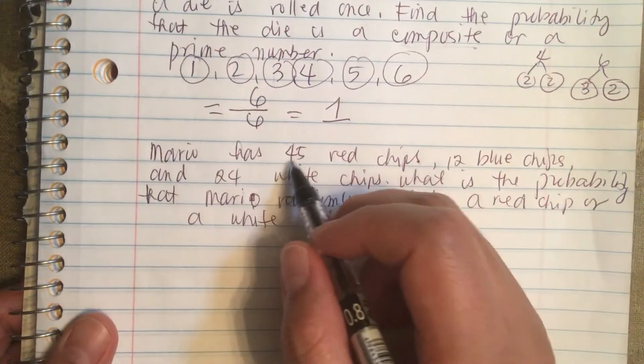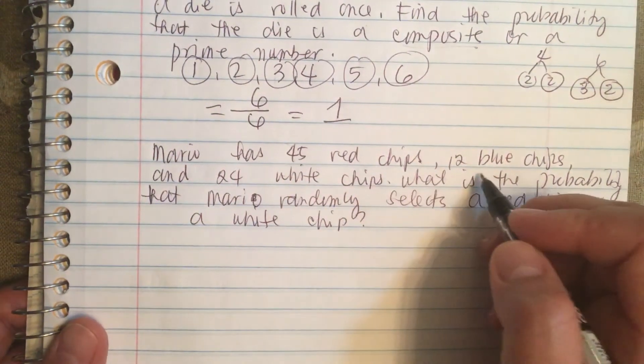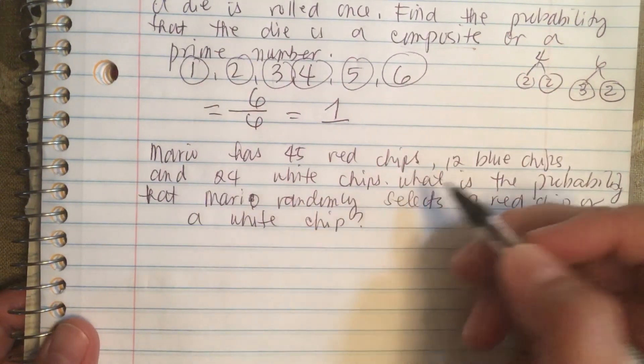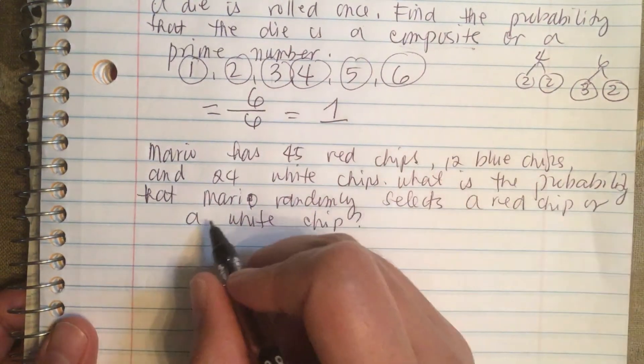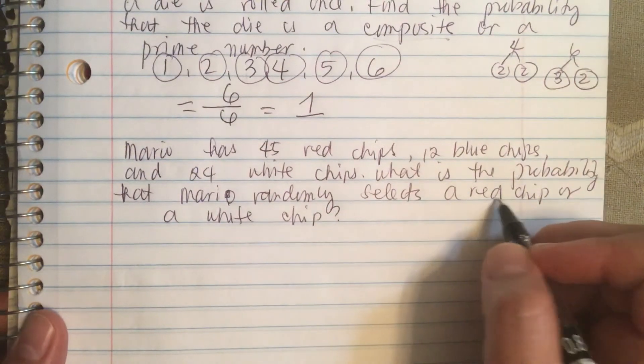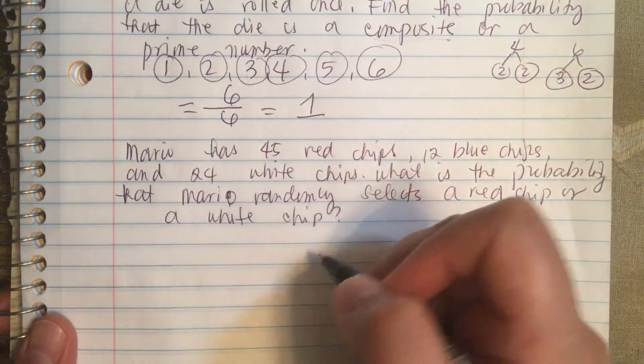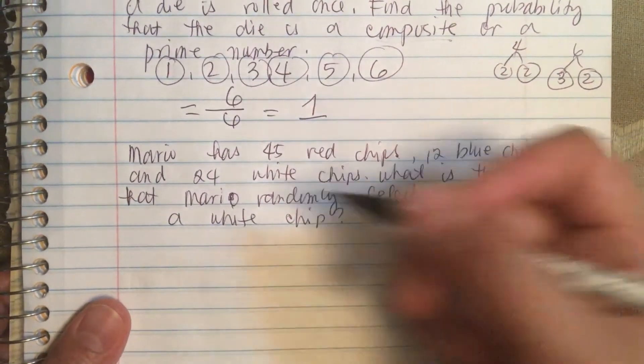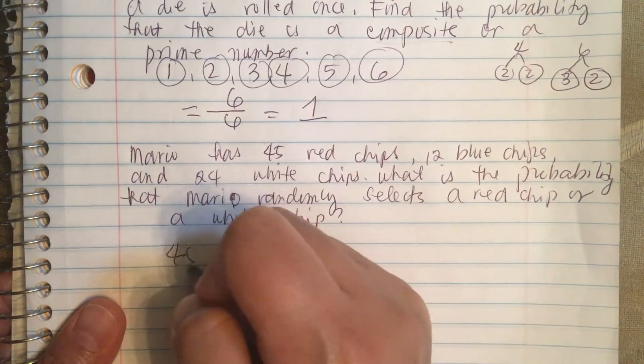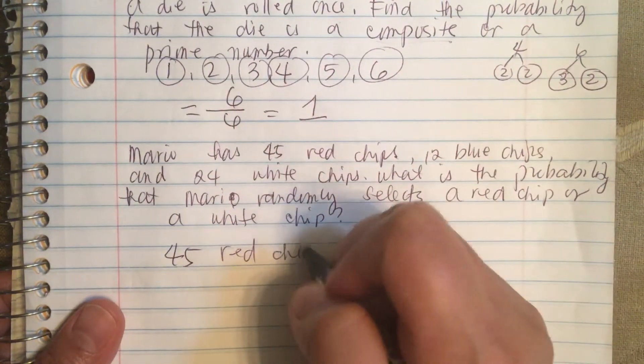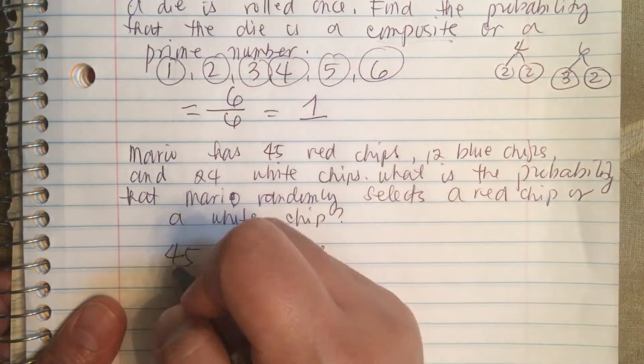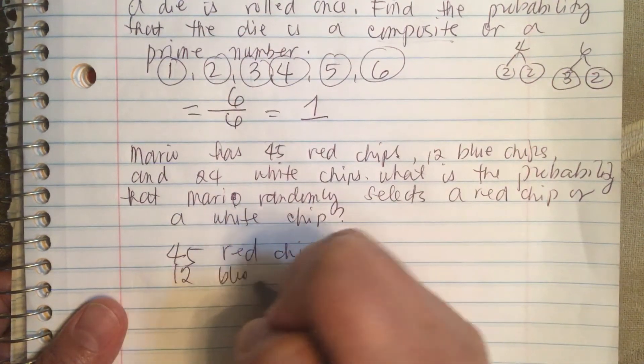Mario has 45 red chips, 12 blue chips, and 24 white chips. What is the probability that Mario randomly selects a red chip or a white chip?